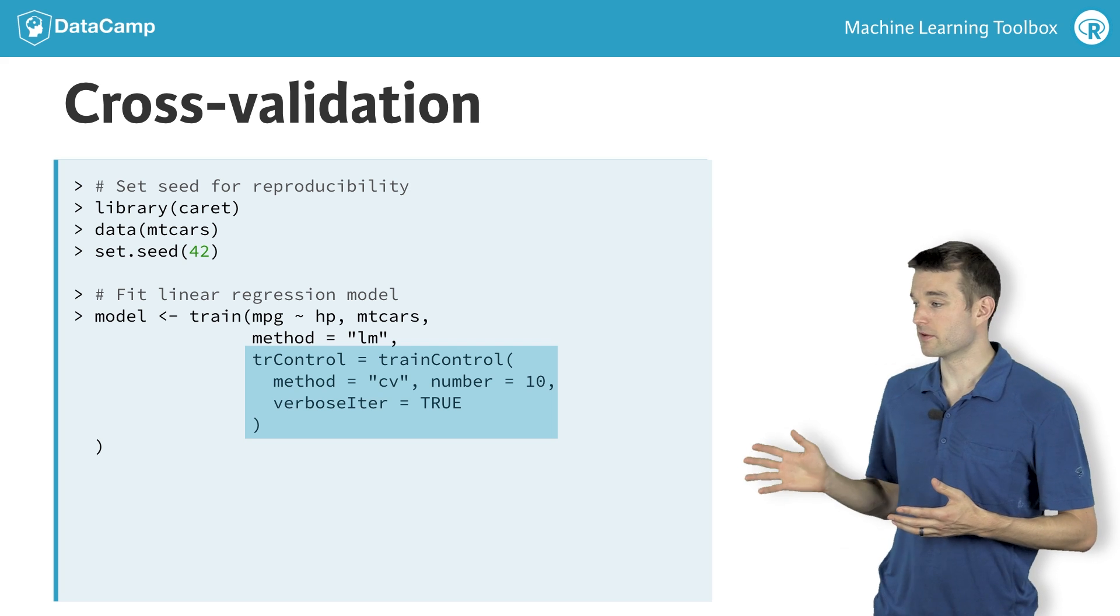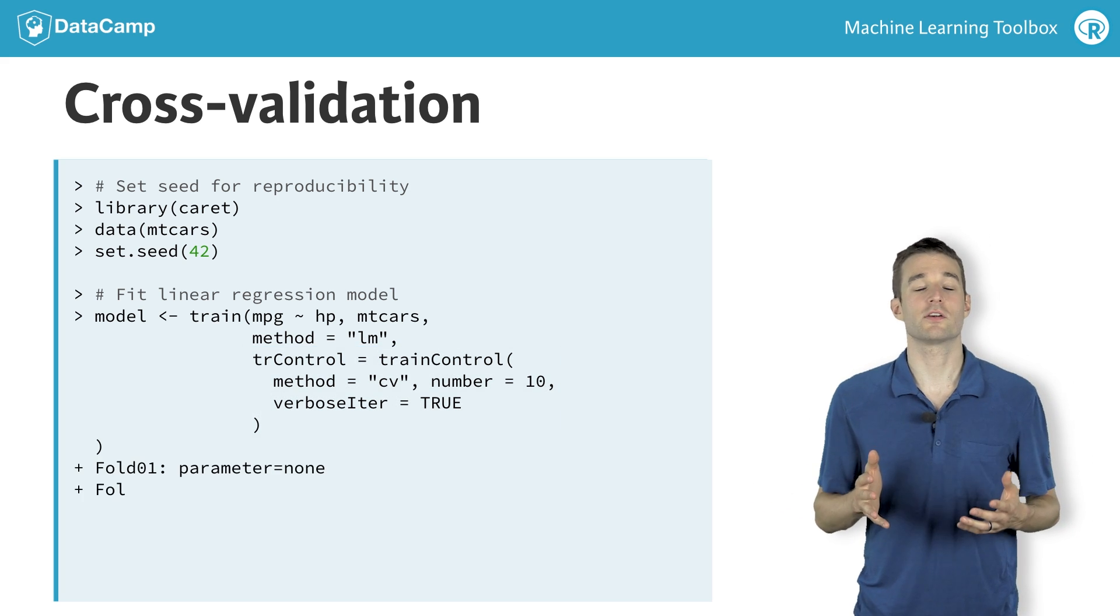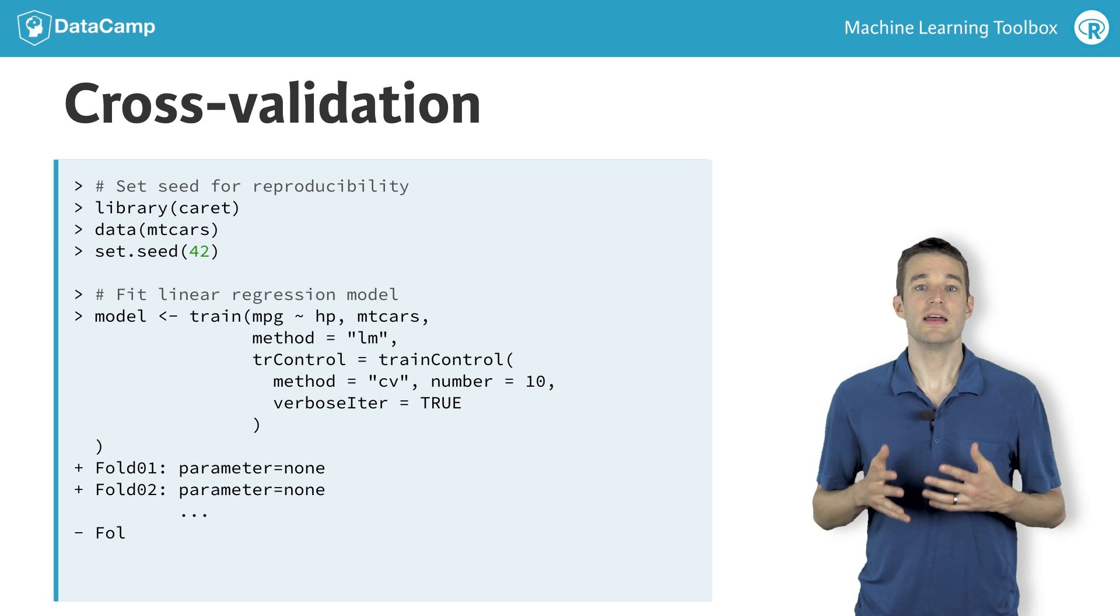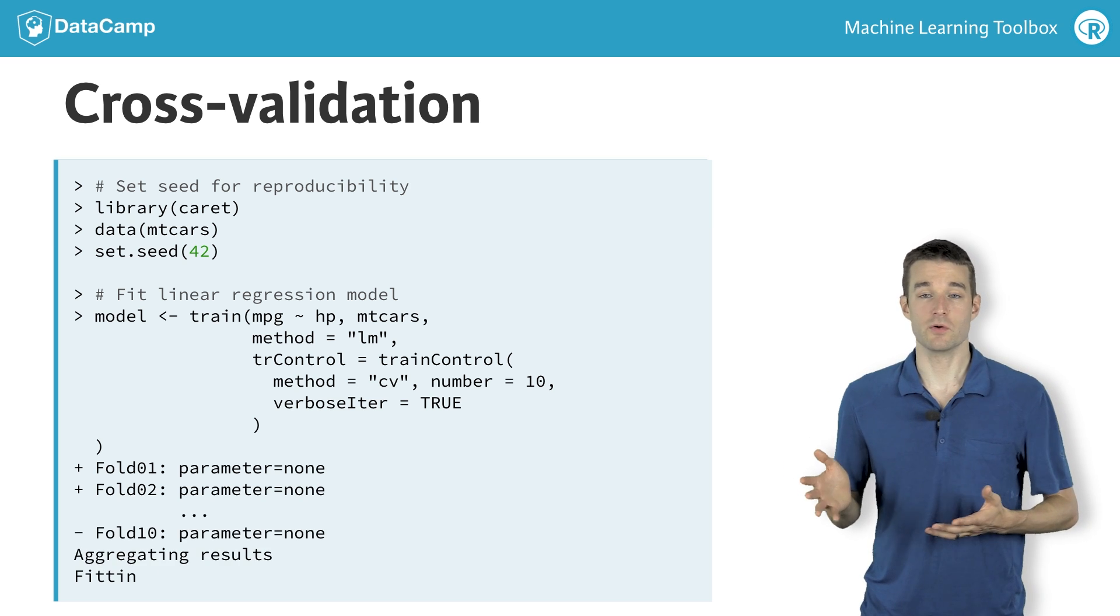Additionally, we provide the verbose iter equals true argument, which gives us a progress log as the model is being fit, and lets us know if we have time to get coffee while the models run.